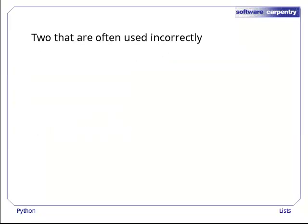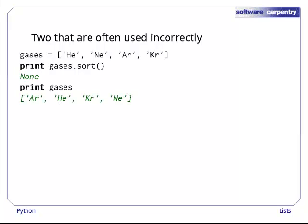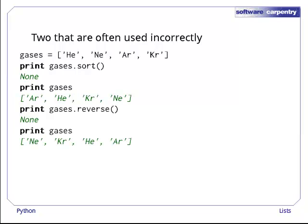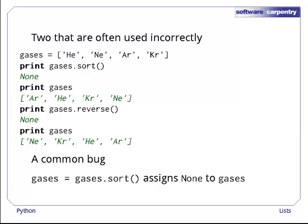Here are two methods that are often used incorrectly. Let's reset the gases list, and then print the result of gases.sort. As you can see, the sort method returns none, which is the special value Python uses for nothing here. However, if we now print gases, it has been sorted alphabetically. Similarly, gases.reverse returns nothing, but reverses the list in place. People often expect sort and reverse to return the sorted or reversed list, which leads to a common bug. Gases equals gases.sort does sort the list that gases refers to, but then assigns none to the variable gases, effectively throwing away the data that has just been sorted.